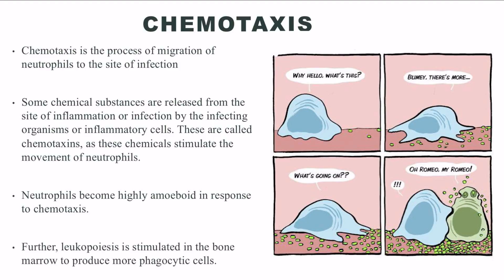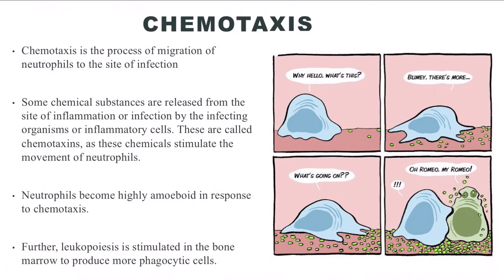With the beginning of chemotaxis, leukopoiesis is also stimulated in the bone marrow for the production of more white blood cells.